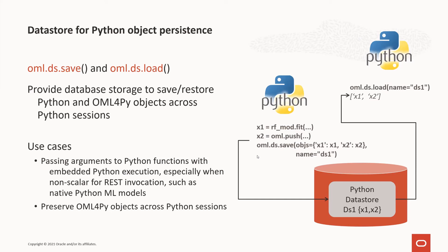Normally, with Python objects, when your Python engine shuts down, all the objects in memory are lost unless they've been saved — normally to a flat file. OML4Py mimics this behavior for proxy objects, such as those of temporary tables, views, and default-named model objects. For example, if you build an in-database model but haven't saved it in a datastore, that in-database model will automatically be deleted when your OML4Py session ends. This behavior mimics typical Python engine behavior for Python objects. Datastores are also necessary for passing non-scalar arguments, like Python machine learning model objects, to Python functions for use in embedded Python execution, especially for the REST API. A datastore can contain one or more Python objects, making it very convenient for passing data into user-defined functions.